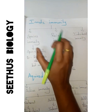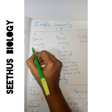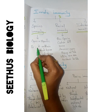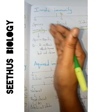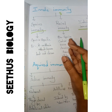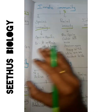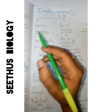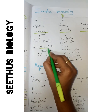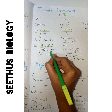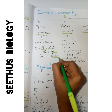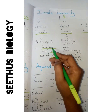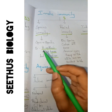Innate immunity is classified into three types: species immunity, racial immunity, and individual immunity. Species immunity refers to immunity among different species — humans, fish, and chickens each belong to different species. For example, Bacillus anthracis causes anthrax, which mainly affects human beings but does not affect chickens. Chickens are more resistant to this disease, while humans are susceptible.